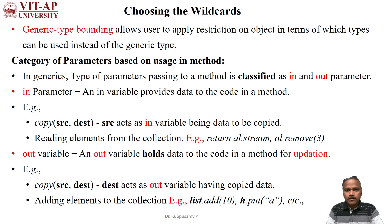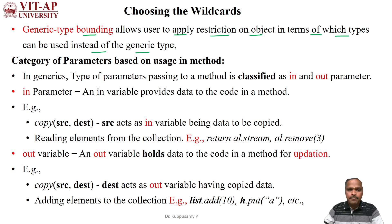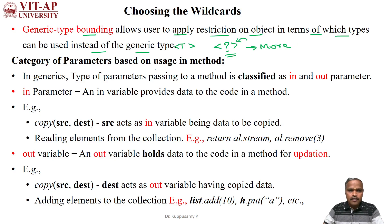Here we will discuss how to choose wildcards in generic programming. In generic programming we have different types of wildcards: upper bounded wildcard, lower bounded wildcard, and unbounded wildcard. Generic type bounding allows the user to apply restrictions over objects in terms of which data types can be used instead of the generic type parameters. When you use a wildcard, it will accept any type of object, giving more flexibility to access the data type.